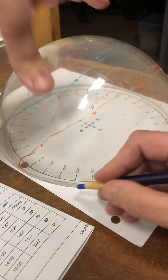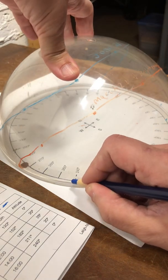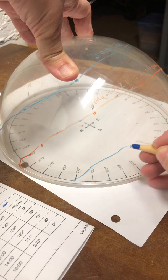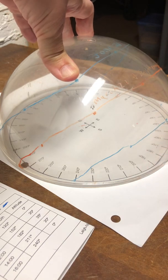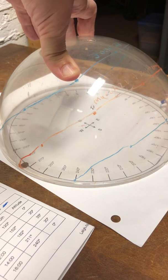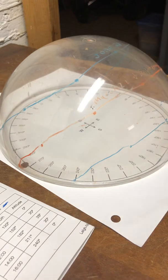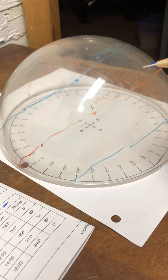Then I connect these dots, and I get to see the sun's path for December. Now, as you can see, I've already plotted June, March, and September.